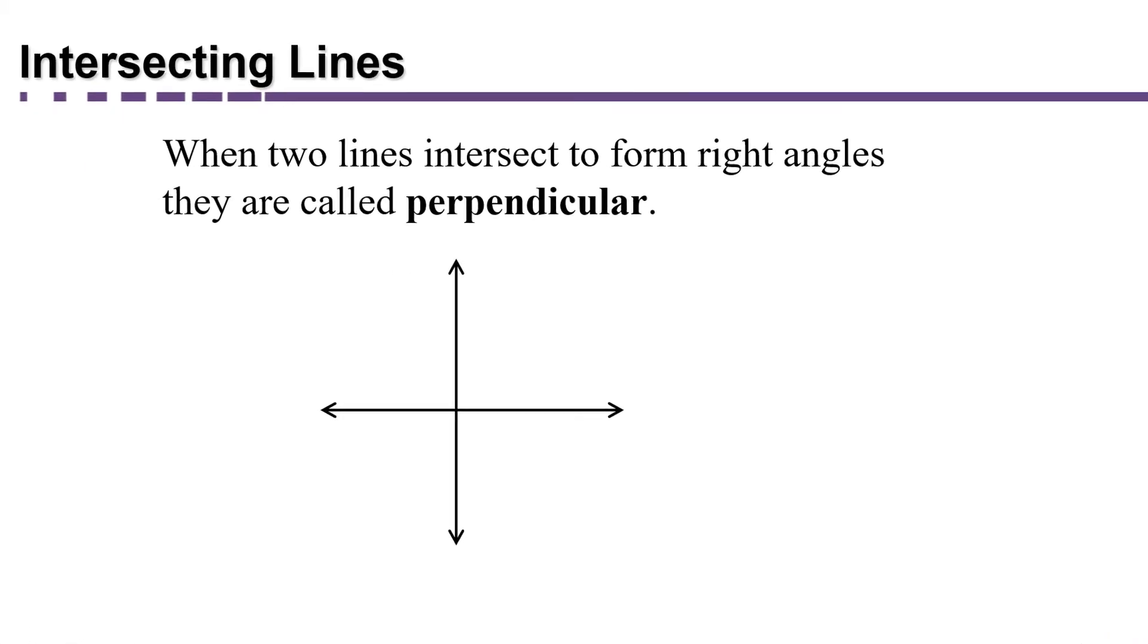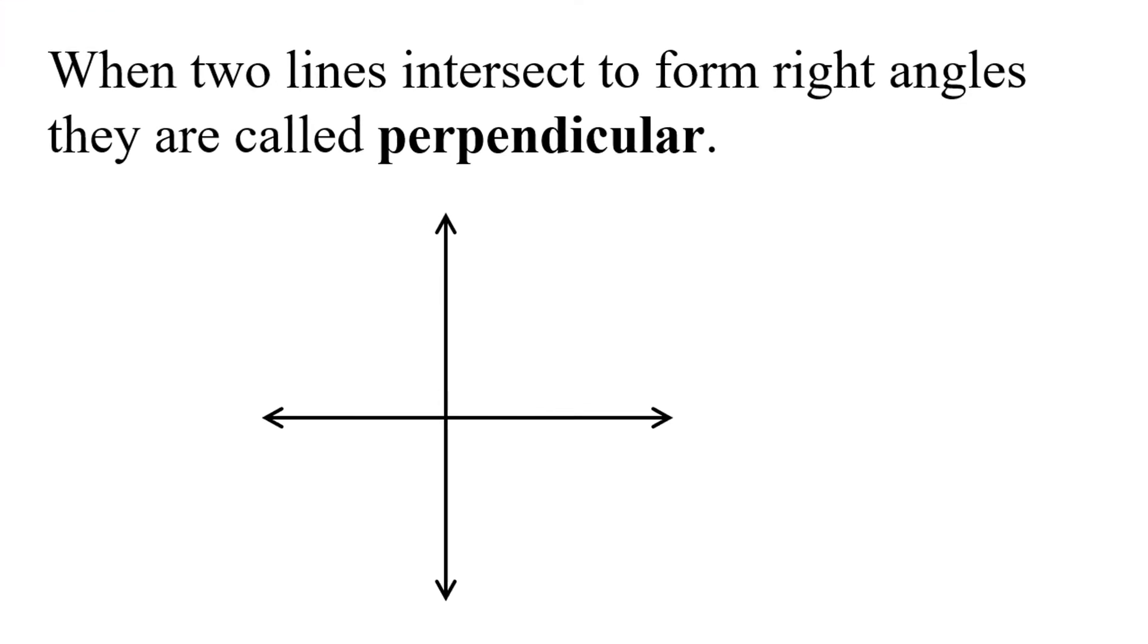When two lines intersect to form right angles, they're called perpendicular. Remember, right angles are angles of 90 degrees. If this angle is 90 degrees, then all four of the angles are 90 degrees. We can also denote the fact that an angle is 90 degrees by drawing a perfect little square.